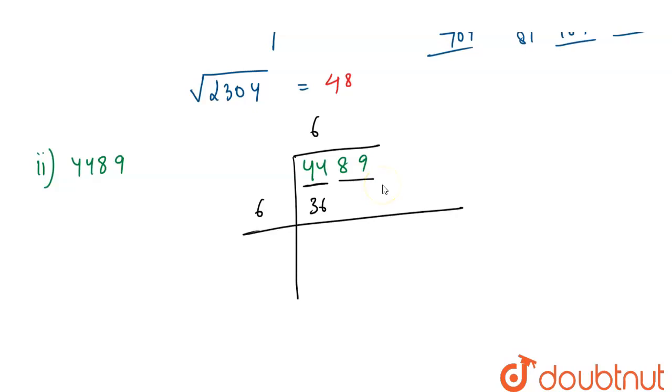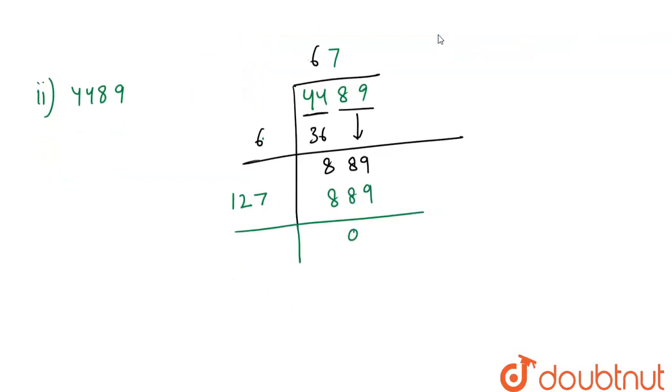Now subtracting it, 14 minus 6 is 8, and this will come 3. Taking these two down, here we get 889. Adding these two, 6 plus 6, we get 12. And if we multiply 127×7, we get 889. So we got 0 here. The square root of 4489 is 67.